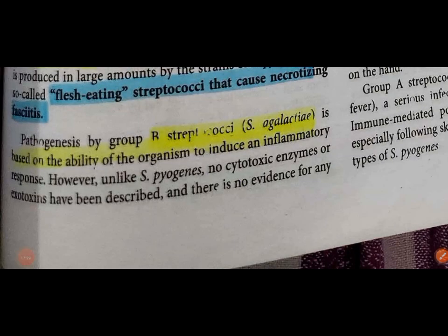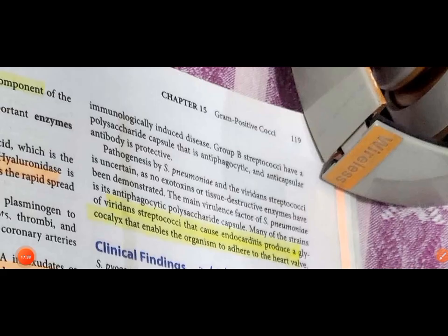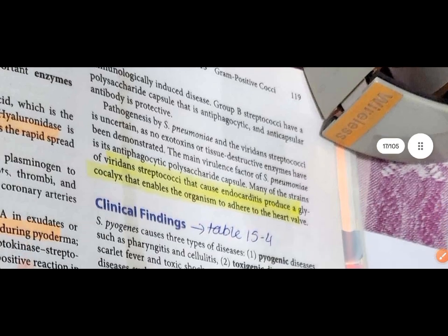Group B S. agalactiae pathogenesis: it causes only an inflammatory response and has no cytotoxic enzymes. Group B streptococci have polysaccharide capsules that make them antiphagocytic. S. pyogenes pathogenesis summary: it does produce exotoxins, whereas Group B does not produce the same range of exotoxins.